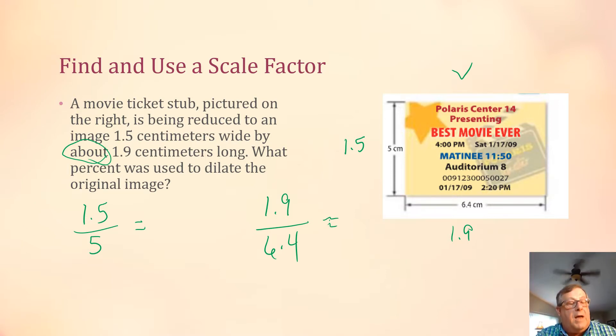I'm going to take my calculator, and I've got 1.5 divided by 5, and that comes to 0.3 or 30 percent, moving that decimal place two points to the right, 30 percent.